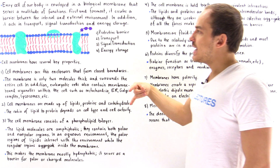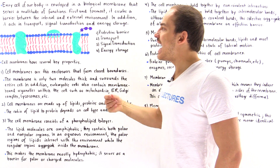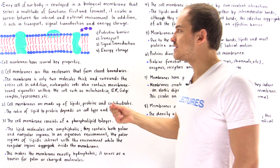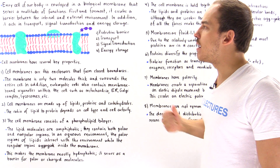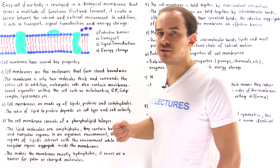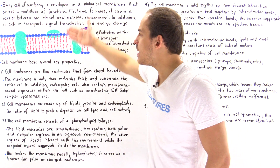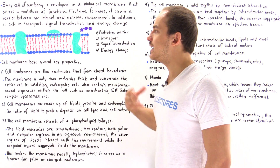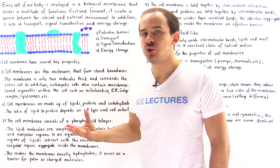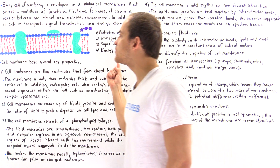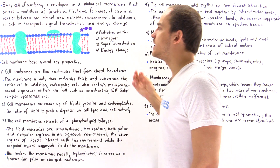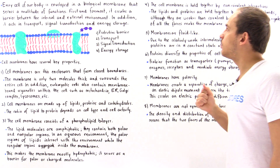A non-polar molecule, such as cholesterol, can easily make its way across the cell membrane because the membrane is predominantly non-polar.